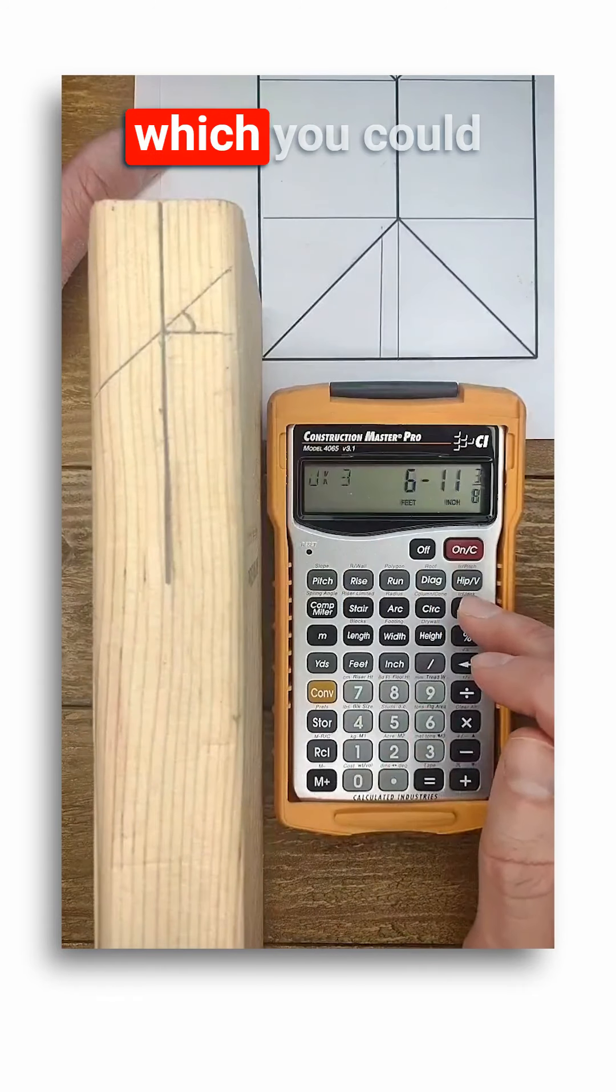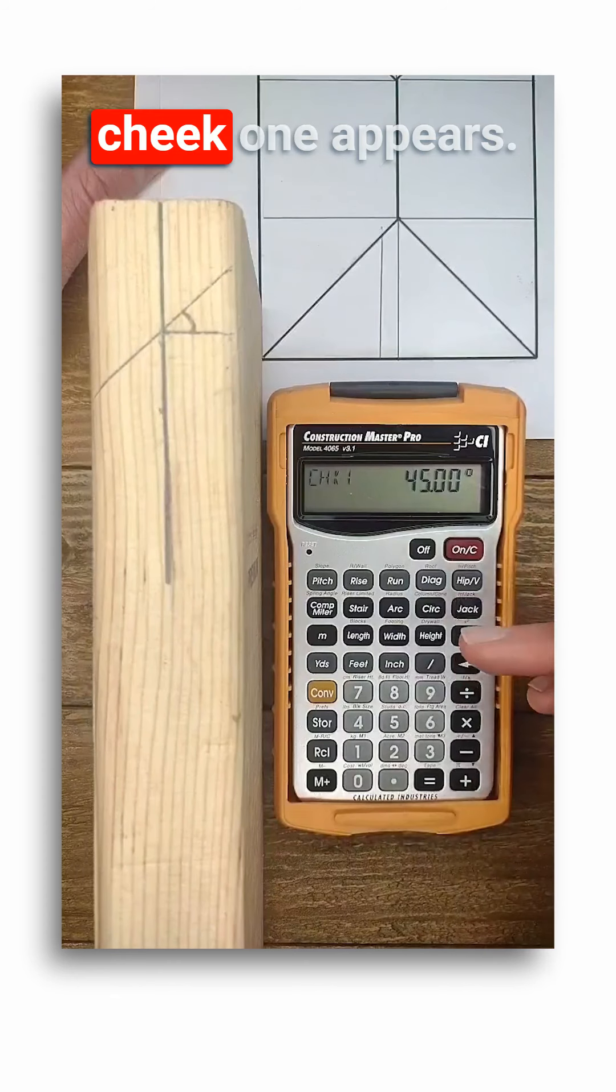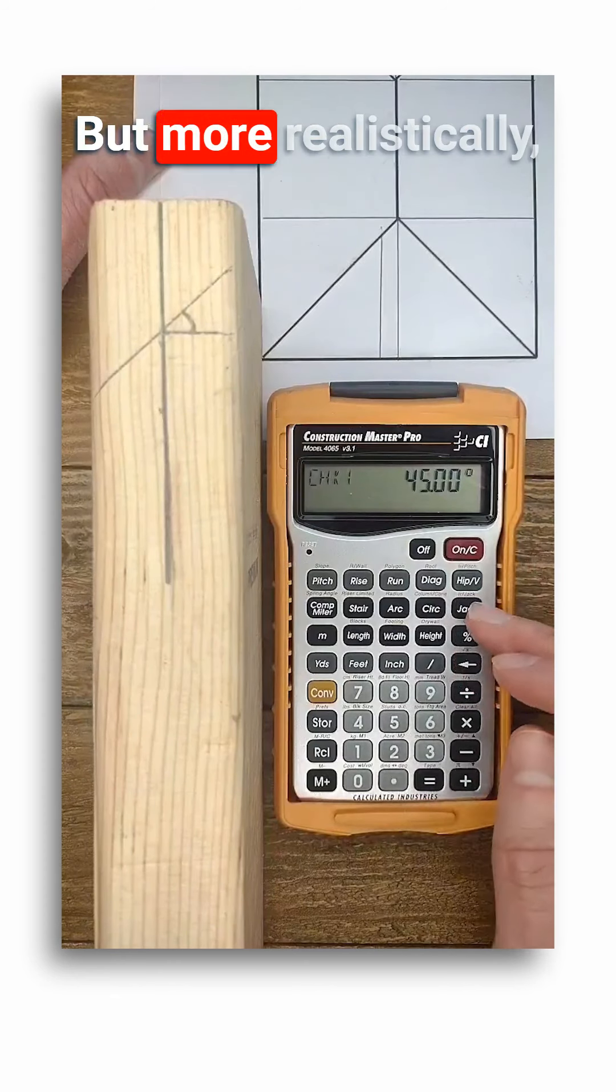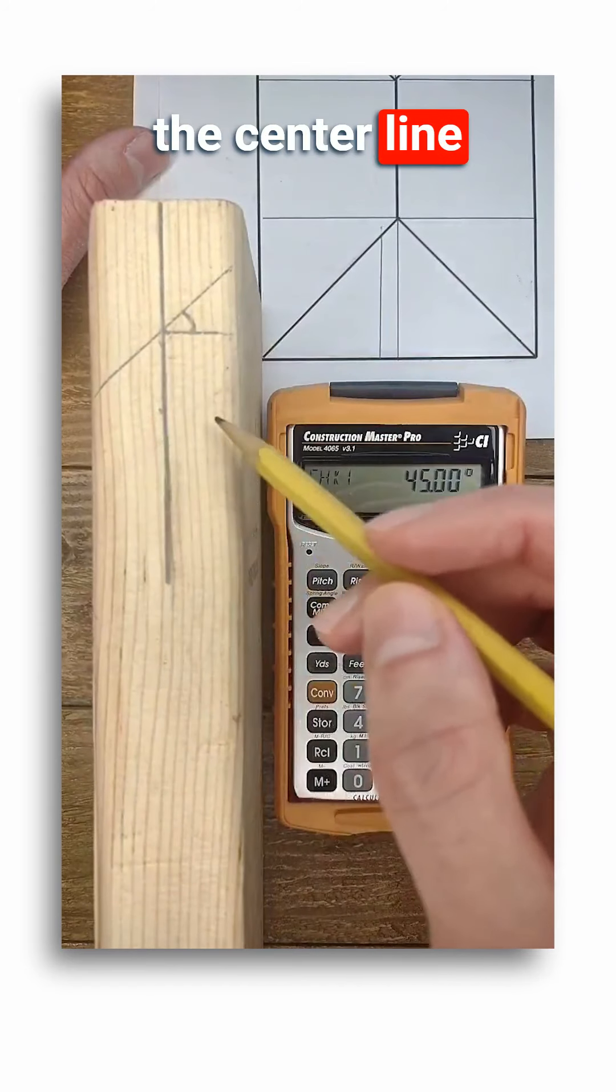Now if you wanted to solve for the long point of the jack rafter, it'd be pretty simple. You would just have to use this angle, which you could find by continuing to toggle through the jack button until cheek 1 appears.